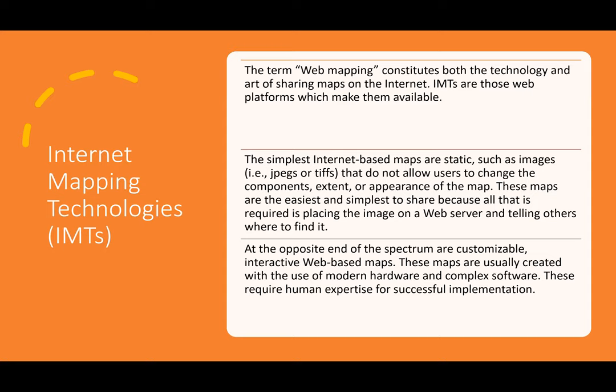Static maps are the easiest to share — just place the image on a web server and tell others where to find it. At the opposite end of the spectrum are customizable, interactive web-based maps. These are usually created with modern hardware and complex software, requiring human expertise for successful implementation. You can make changes, analyze, and make more meaning out of the data you have access to.